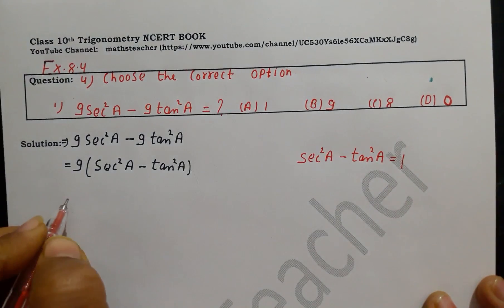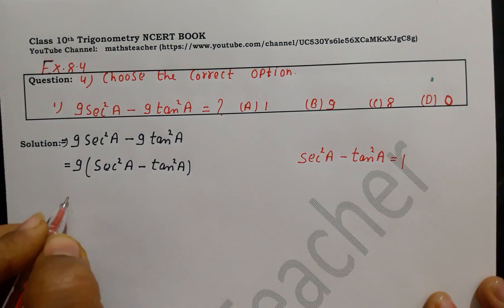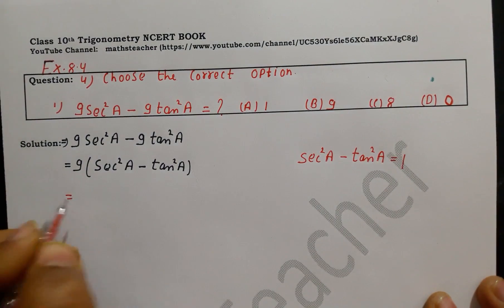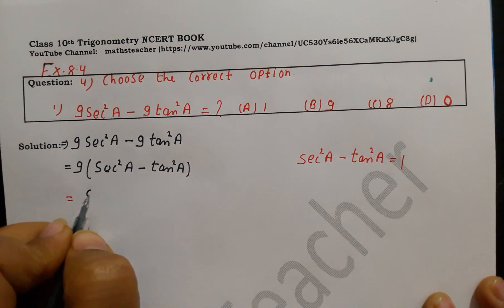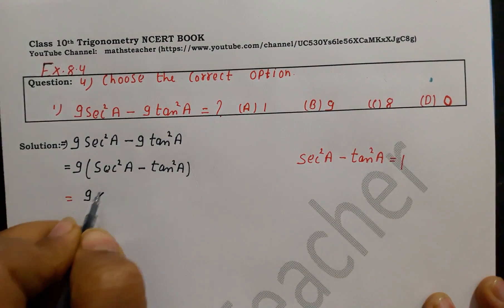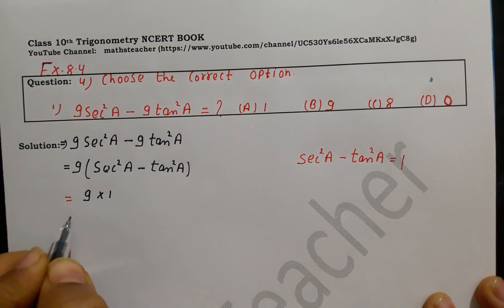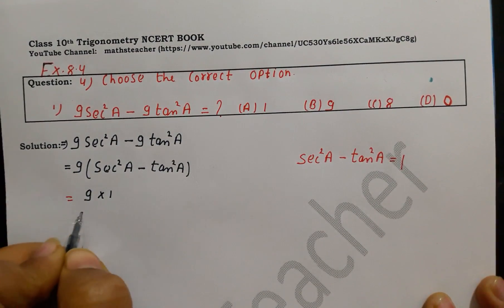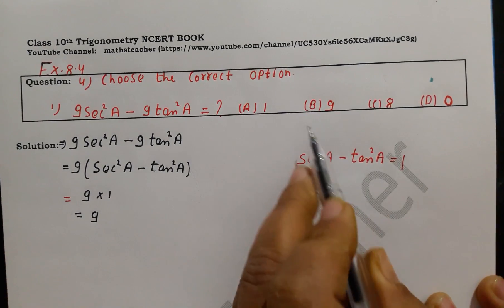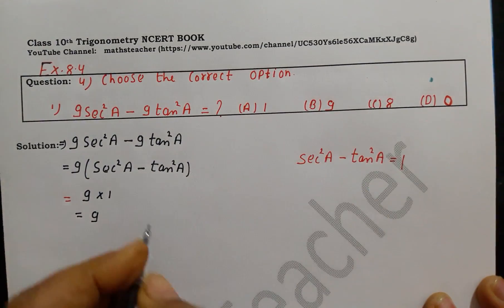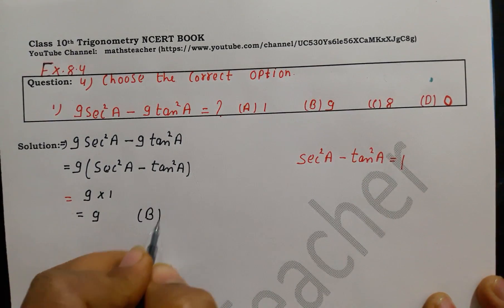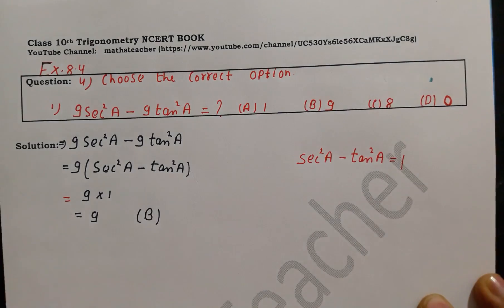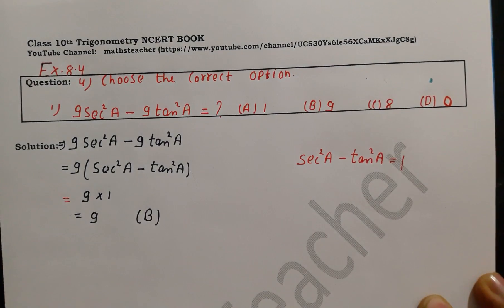We substitute this value: 9 multiplied by 1 gives us 9. So the answer is 9, which means option B is the correct answer for this question.